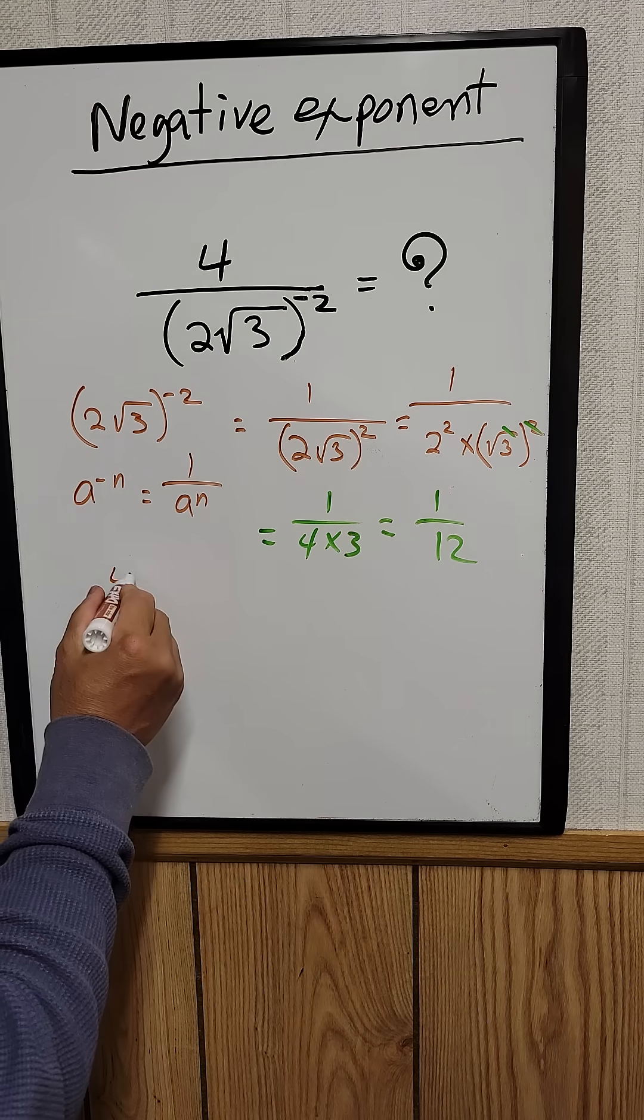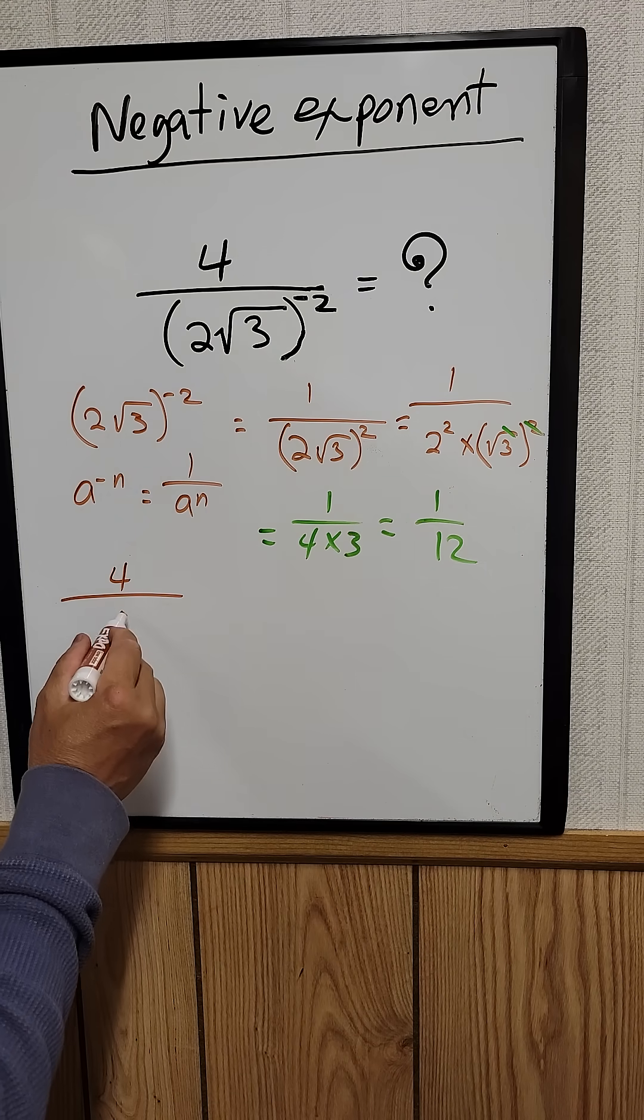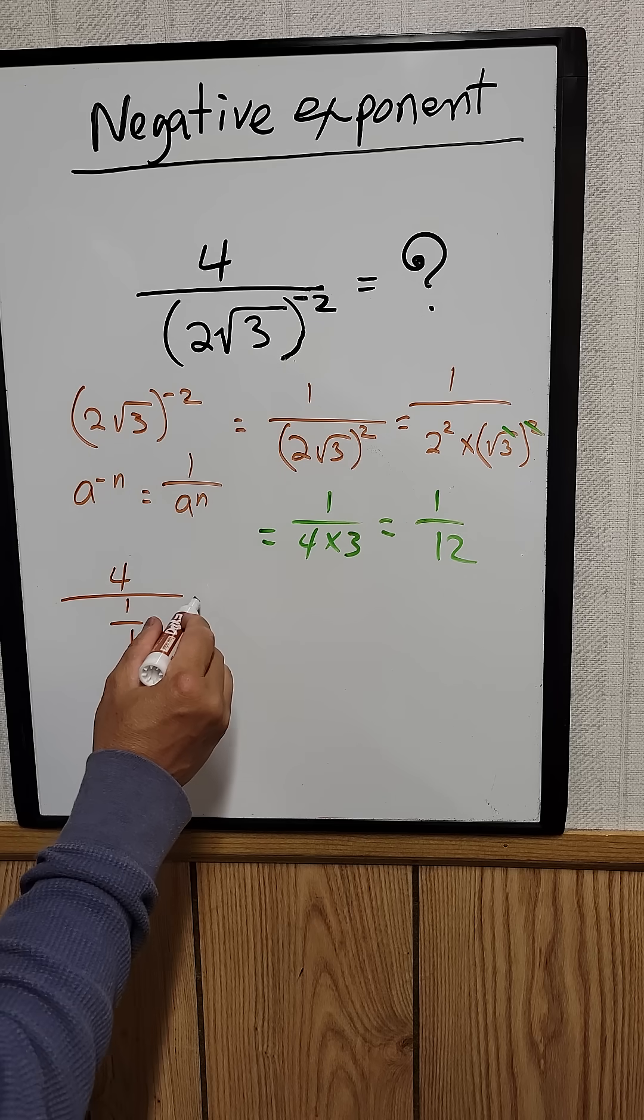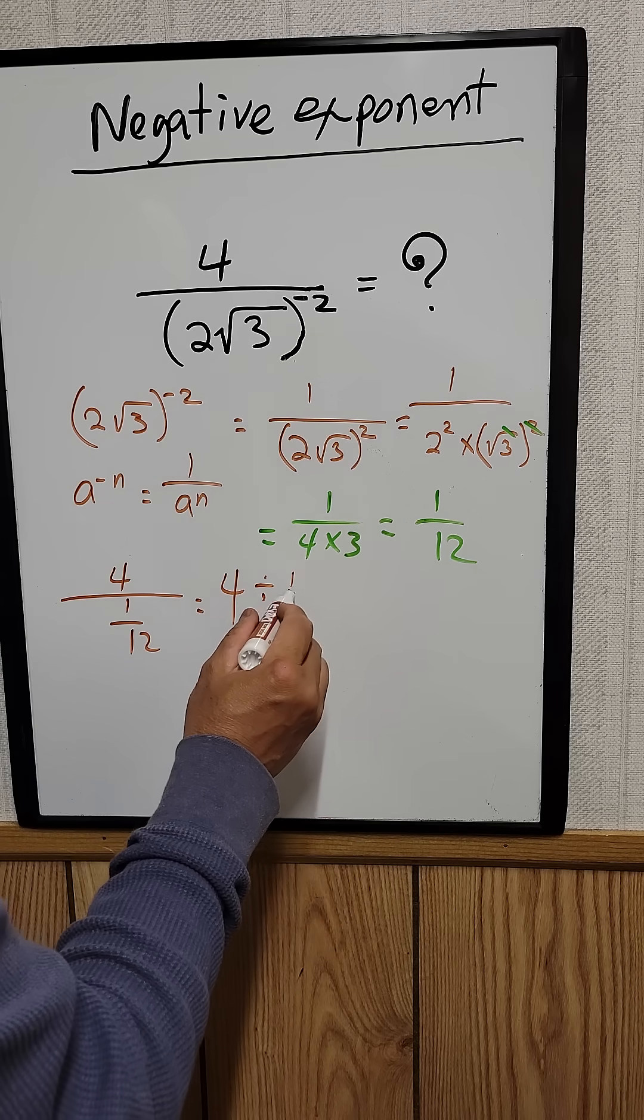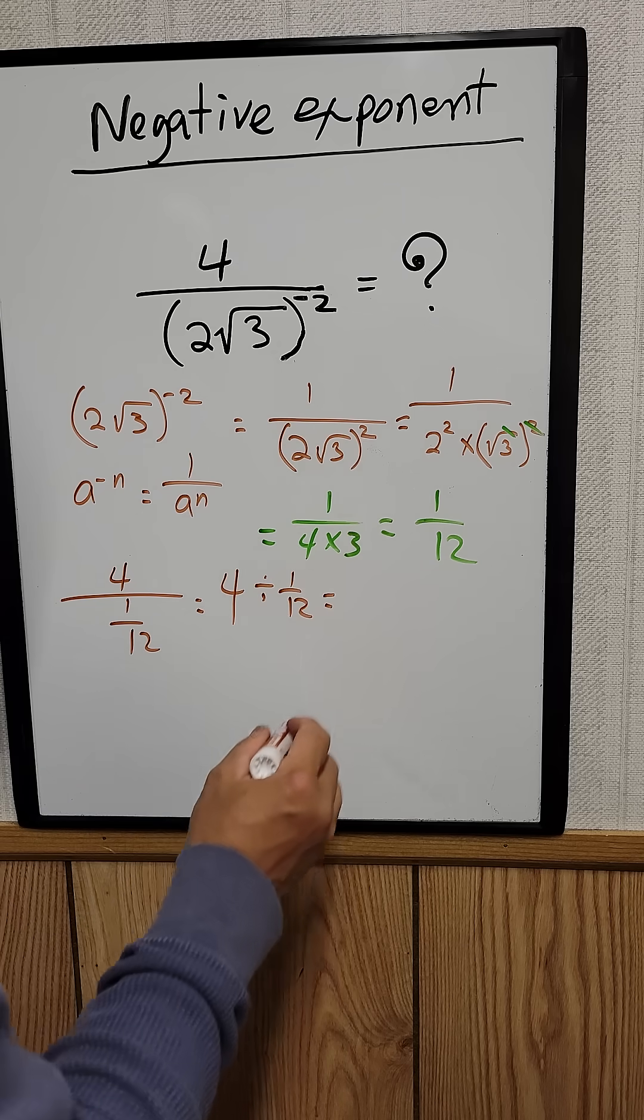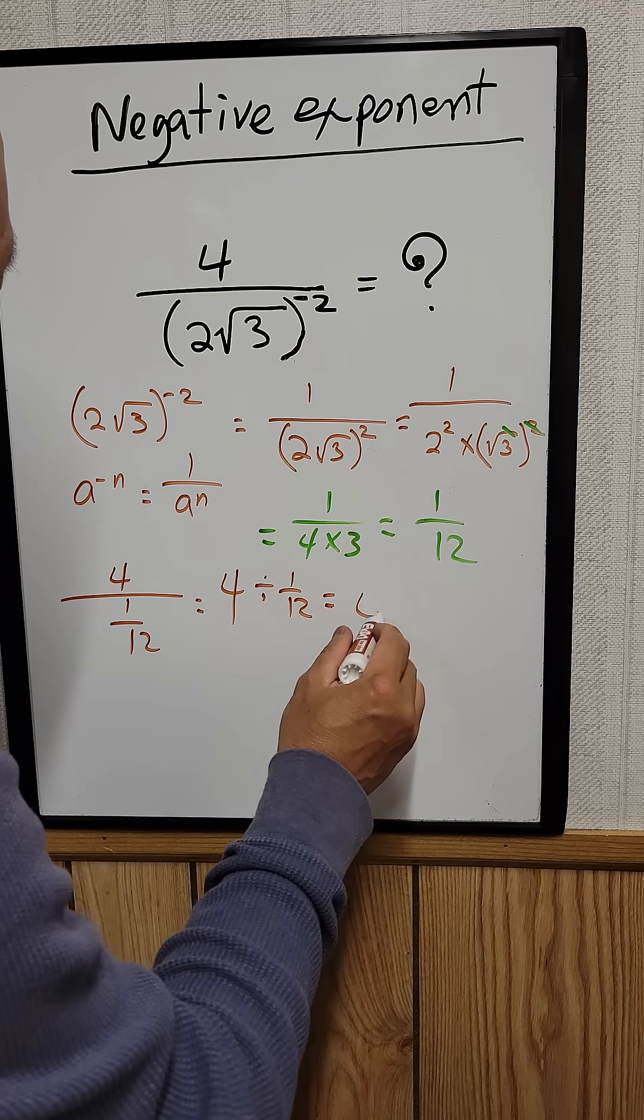We say 4 divided by 1 over 12. We can rewrite that as 4 divided by 1 over 12.